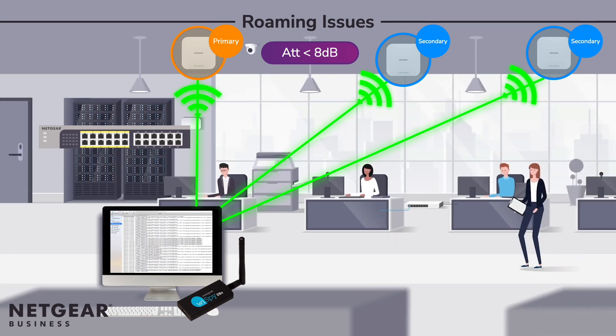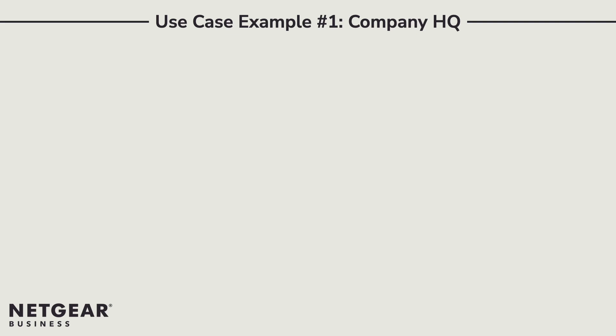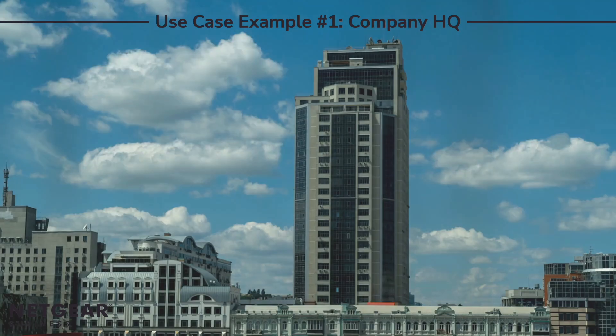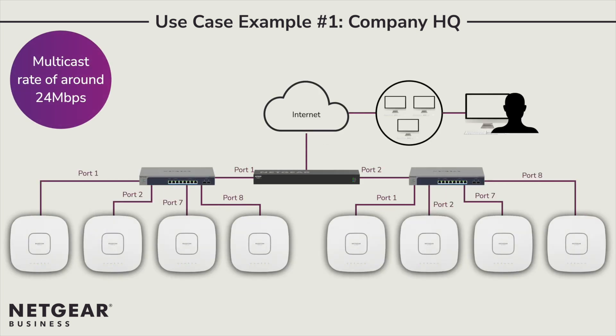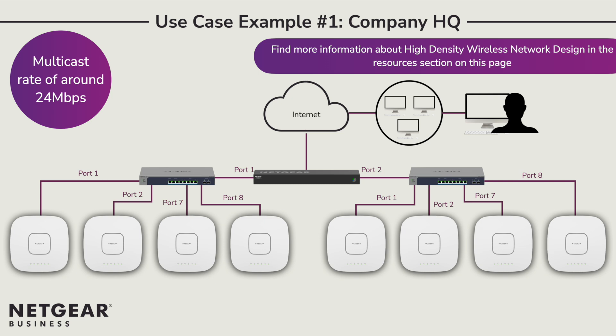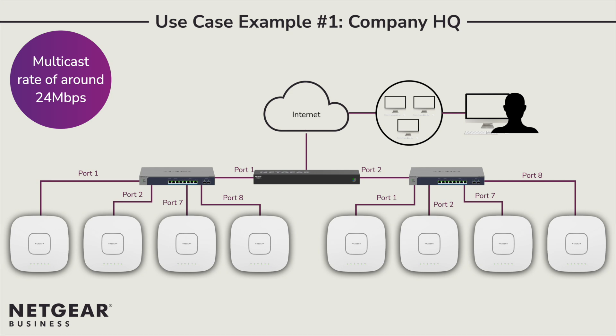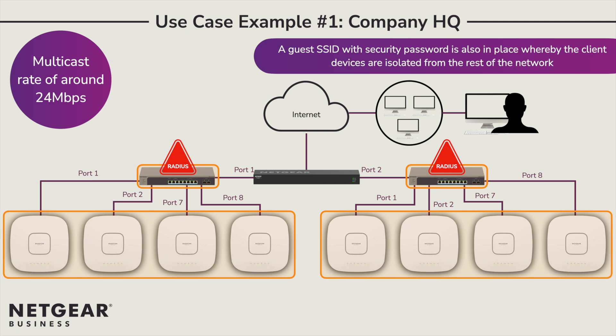The first use case is a company headquarters with a high multicast rate of around 24 Mbps due to the amount of video streams taking place. There are a lot of employees using the Wi-Fi in a single environment, so the high-density rate control setting here will be three or four. WPA Enterprise is being used for security, so a RADIUS server is installed. This needs to include all switches and access points, and a guest SSID with security password is also in place, whereby the client devices are isolated from the rest of the network.